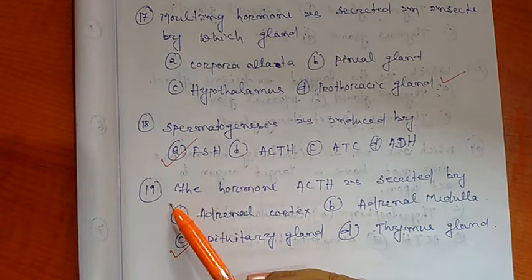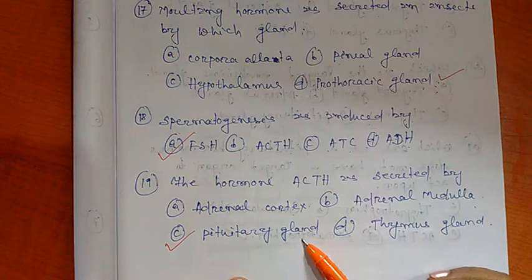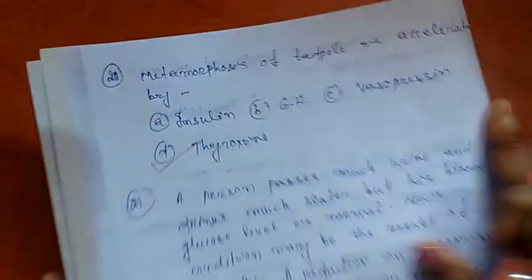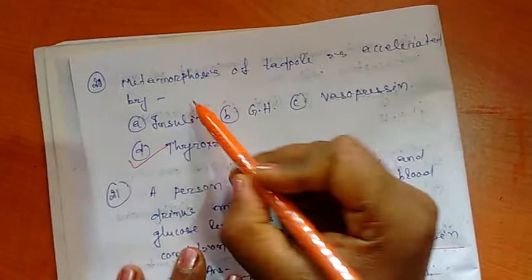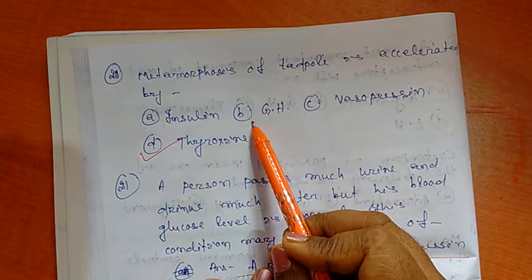Question number 19: Which of the largest endocrine gland? Question number 20: Metamorphosis of tadpole larva is accelerated by. Options are A) Insulin, B) Growth Hormone, C) Vasopressin, and D) Thyroxine. So the right option is thyroxine. Thyroxine accelerates the metamorphosis of tadpole larvae.